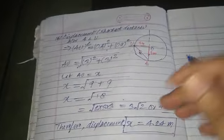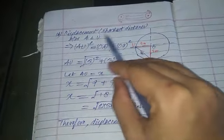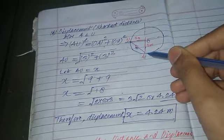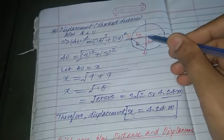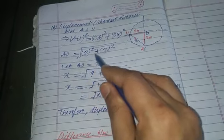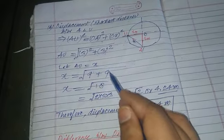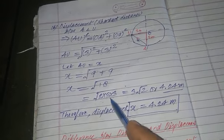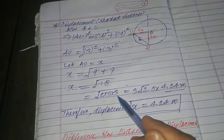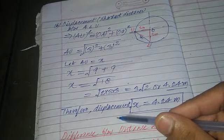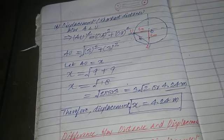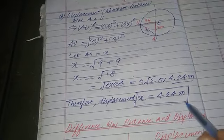Let me draw it once again. Displacement is the shortest distance between A (Australia) and U (USA). AU² = OA² + OU². So the value is: square root of (3² + 3²) = square root of (9 + 9) = square root of 18 = 3√2, which equals 4.24 meters. So displacement comes out to be 4.24 meters.